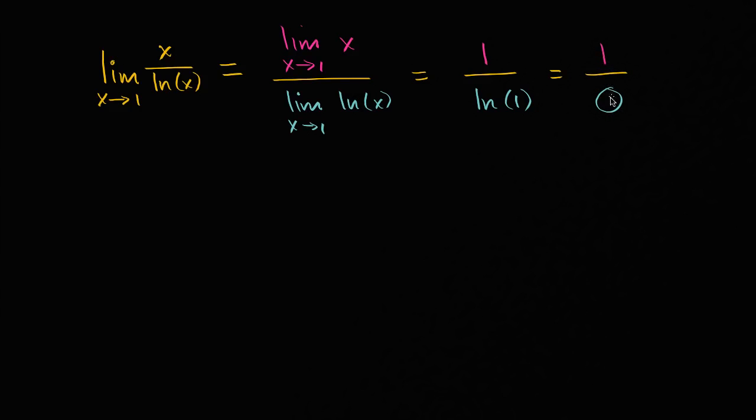If it was zero over zero, we wouldn't necessarily be done yet. That's indeterminate form. As we will learn in the future, there are tools we can apply when we're trying to find limits and we evaluate it like this and we get zero over zero. But one over zero, this is undefined, which tells us that this limit does not exist. So it does not exist. And we are done.